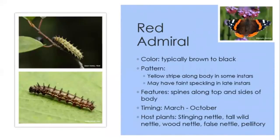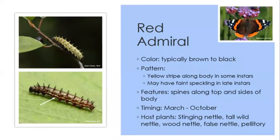The red admiral caterpillar usually has a brown to black body but in early instars can be green. It has a yellow stripe along the body in later instars and spines along the top and sides. This caterpillar has a relatively long window — March all the way through October. It's found on plants in the nettle family, so if you have a patch of stinging nettle and find a caterpillar on it, there's a chance it could be a red admiral.